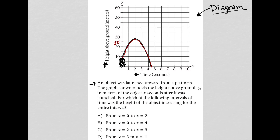So the object was launched upward from a platform. The graph shown models the height above ground y in meters of the object x seconds after it was launched. For which of the following intervals of time was the height of the object increasing for the entire interval?